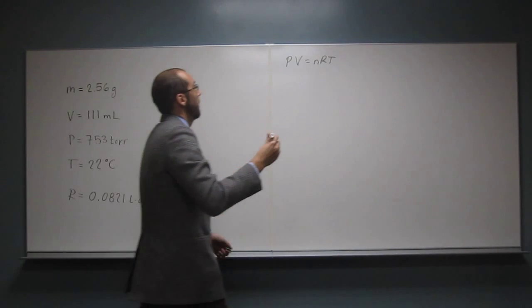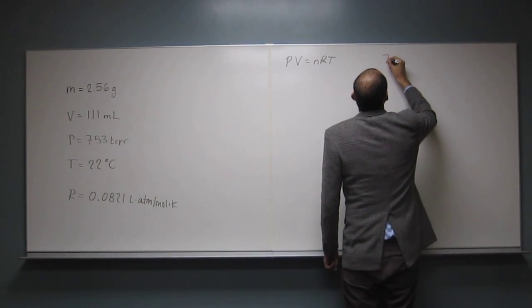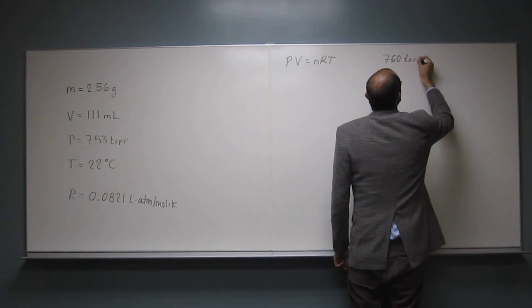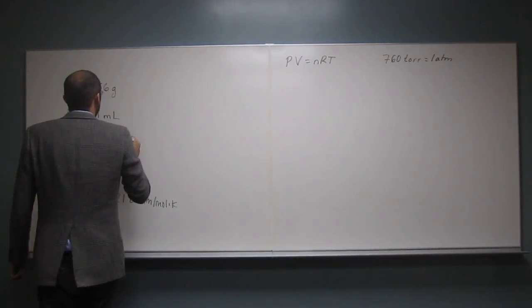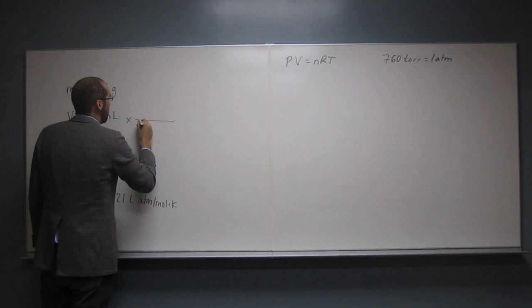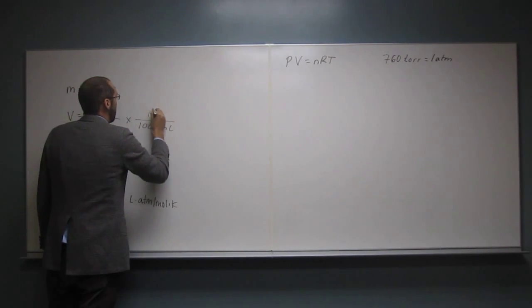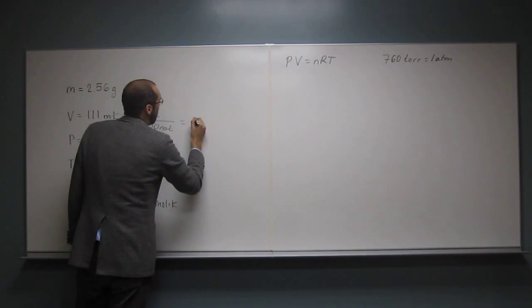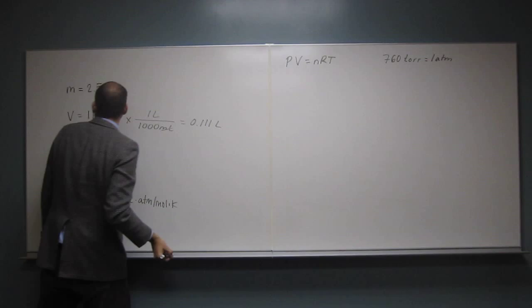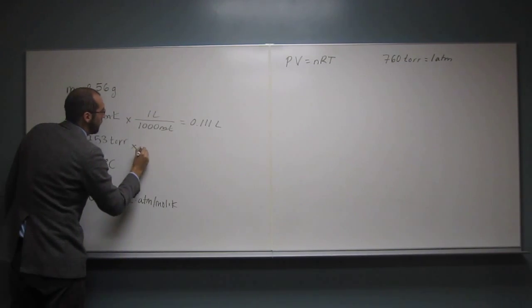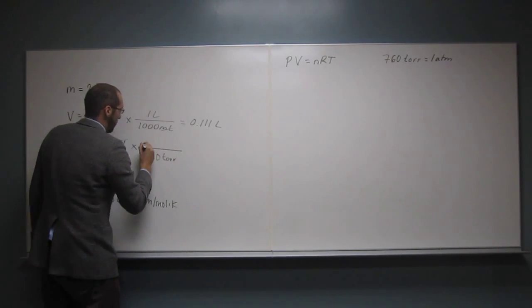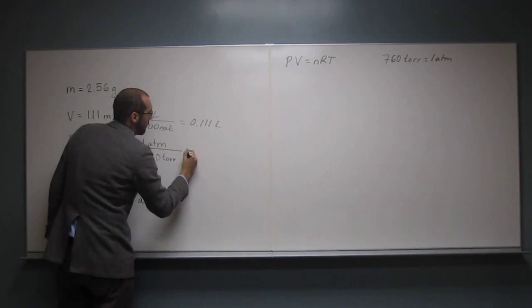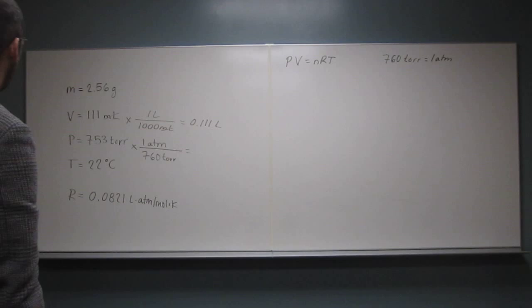In order to do that, we have to remember that 760 torr equals 1 atm. So 760 torr, 1 atm, that would be about 0.99 or something like that.